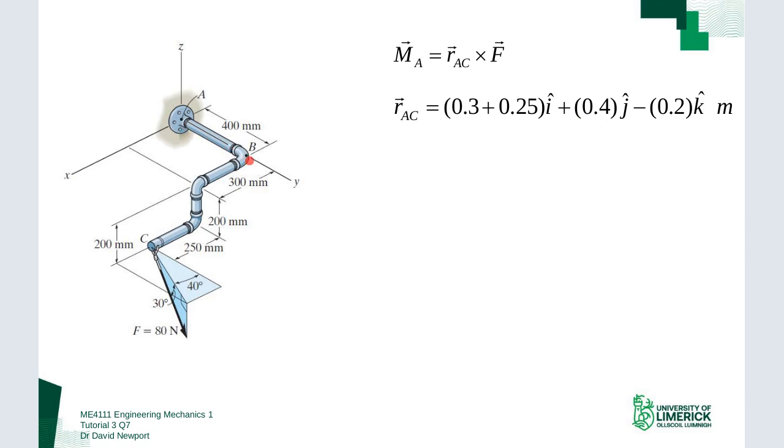In the j-hat direction which is the Y, I'm coming out 400, so 0.4 meters. And in the k-hat direction, because it's acting positive in that direction, I'm coming down 200 millimeters in the minus that direction. So I have plus, plus, minus. That gives me the displacement vector from A to C.